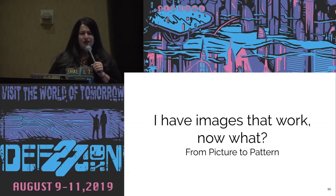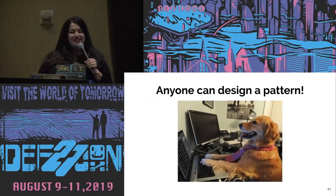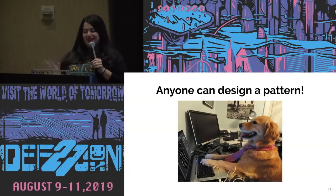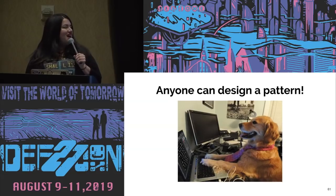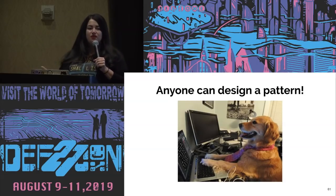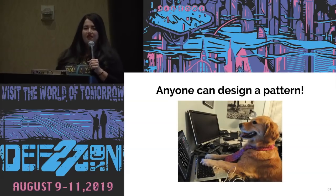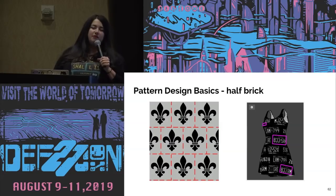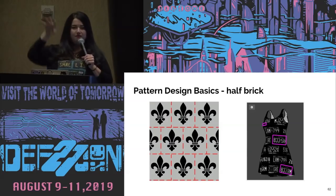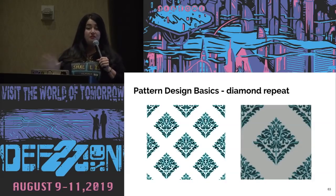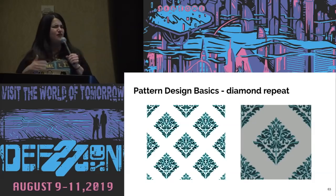Now I have images that work — I want to put them on fabric. Anybody can design a pattern; everybody in this room has the skills at their disposal. The basics: the half-brick layout puts things together in a line, moves them down and shifts them over about halfway for a pretty aesthetic pattern. The diamond repeat is the basis of most seamless pattern making — useful not just for fabric but for any surface design, like car wraps or murals. You divide your design into quadrants, then move each corner to the opposite corner, fill in the middles, and get a beautiful seamless print.